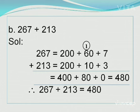Let's start with the first example. Let me explain the second sum, children. I have given you the sum of 267 plus 213. So 267, after expanding, becomes 200 plus 60 plus 7, and 213 becomes 200 plus 10 plus 3. We have done the expanding, so let's start with the addition process.